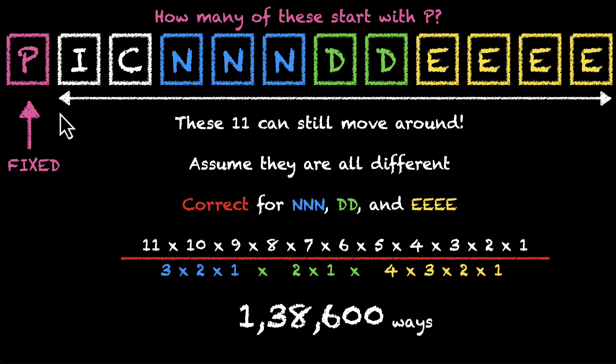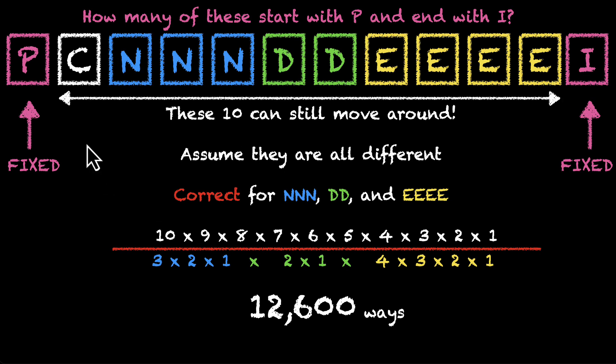To find the number of arrangements where we had words starting with P, we pinned down P, we fixed P and then arranged the remaining 11. To find the number of words that start with P and end with I, we fixed P and fixed I and then arranged the remaining 10.